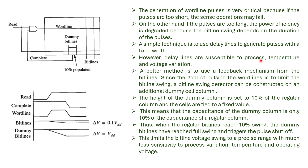Delay lines are susceptible to process, temperature and voltage variation. A better method is to use a feedback mechanism from the bit line. Since the goal of pulsing the word lines is to limit the bit line swing, a bit line swing detector can be constructed using an additional dummy cell column. The height of the dummy column is set to 10% of the regular column and the cells are tied to a fixed value. This means the capacitance of the dummy column is only 10% of the capacitance of a regular column. Thus, when the regular bit lines reach 10% swing, the dummy bit lines have reached full swing and trigger the pulse shutoff. This limits the bit line voltage swing to a precise range with much less sensitivity to process variation, temperature and operating voltage.